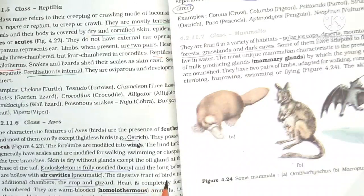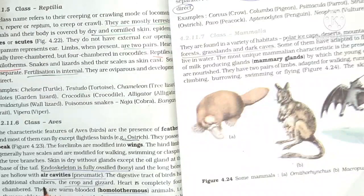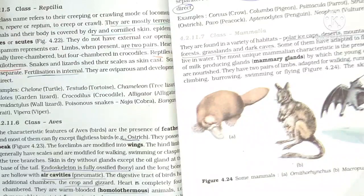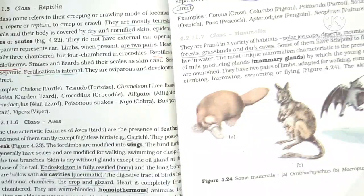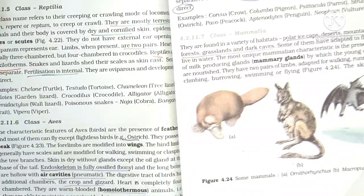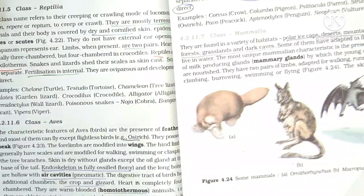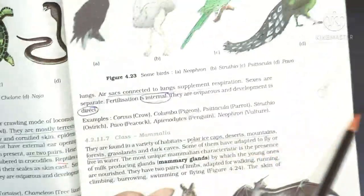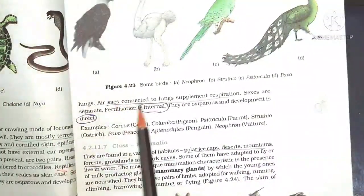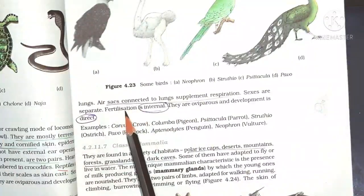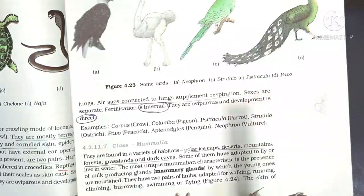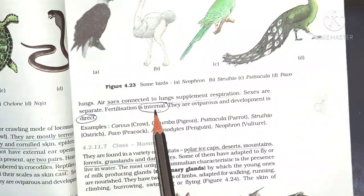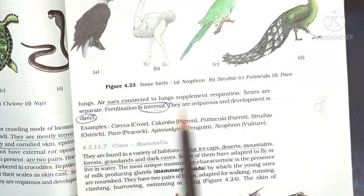The digestive tract has additional chambers: the crop and gizzard. Heart is completely four-chambered. They are warm-blooded (homeotherms) and maintain a constant body temperature. Respiration is by lungs; air sacs supplement respiration. Sexes are separate; fertilization is internal. They are oviparous and development is direct — no larval stage.